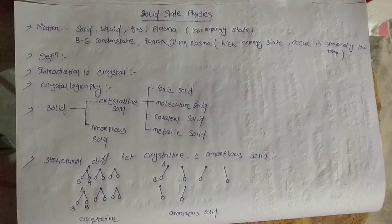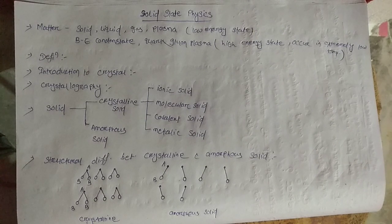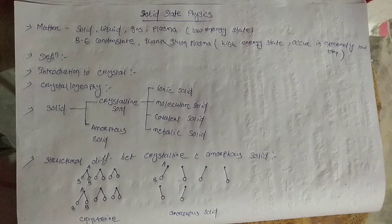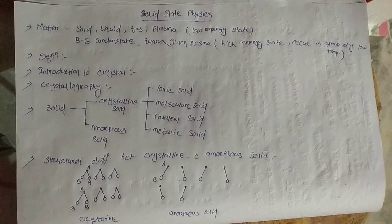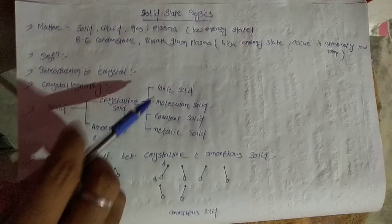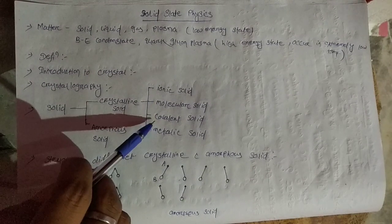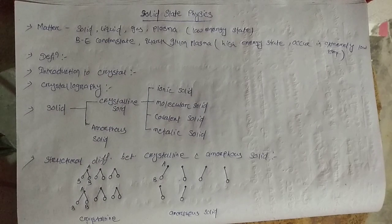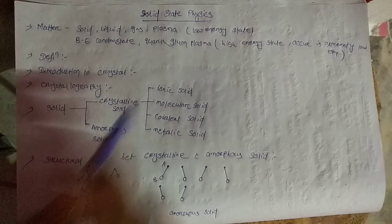In this video, we will discuss the classification of crystalline solids. Crystalline solids are classified depending upon the type of constituent particles and the nature of intermolecular forces between them. There are four types: the first is ionic solids, the second is molecular solids, the third is covalent solids, and the fourth is metallic solids.